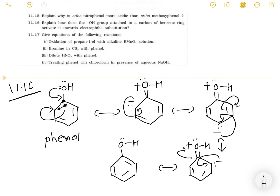So in phenol, the oxygen directly attached to the sp2 carbon of benzene increases electron density in the ring. OH is an electron donating group and it increases the electron density in the benzene ring. Therefore, the benzene ring is activated towards electrophilic substitution — this is called the EAS reaction in short form. This concludes 11.16.